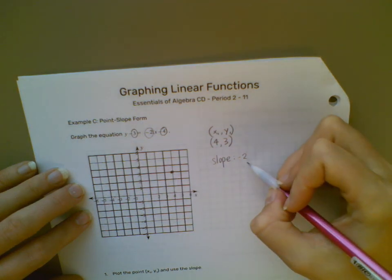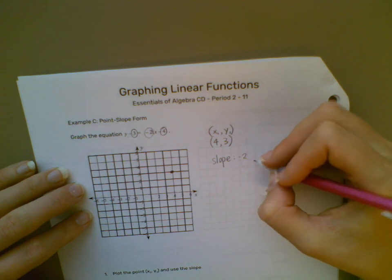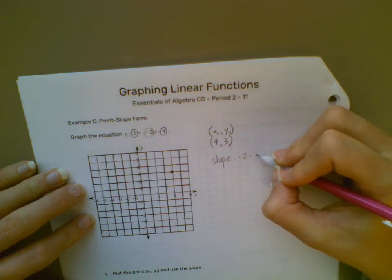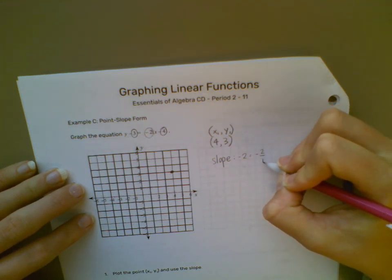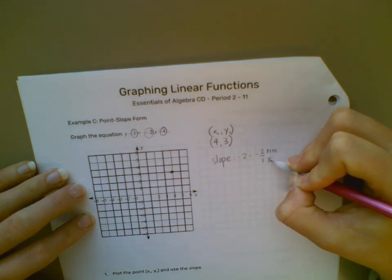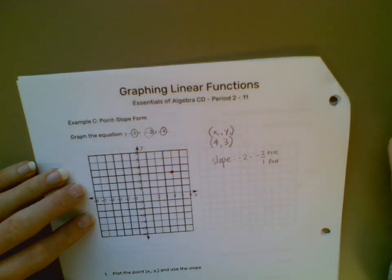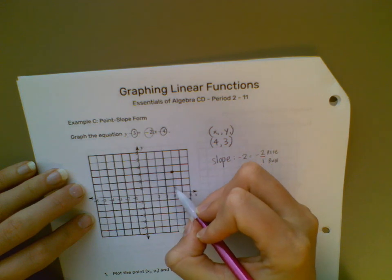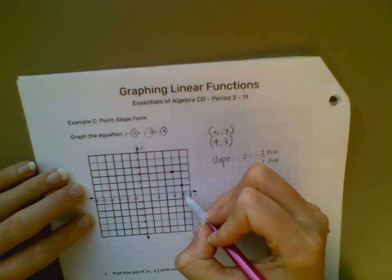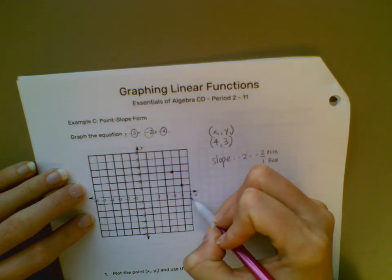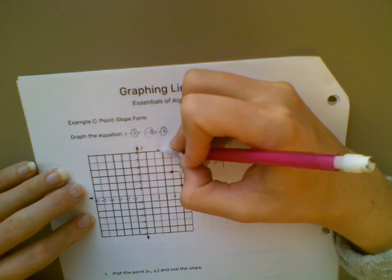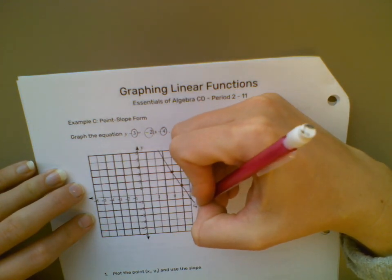And then my slope tells me rise over run. We'll rewrite this as a fraction, so it's going to be negative 2 over 1. So I go down 1, 2, over 1. Down 1, 2, over 1. And then that's what I use to draw my line.